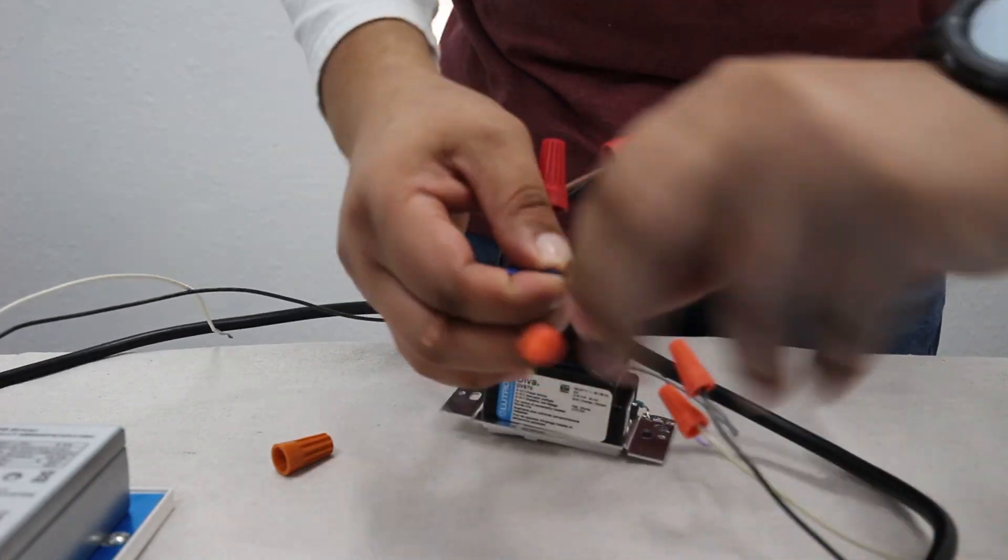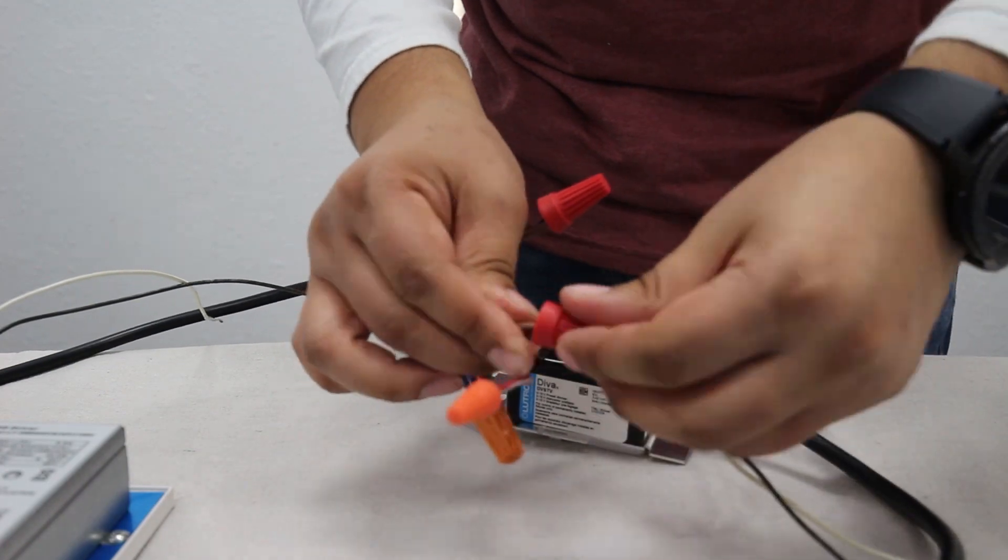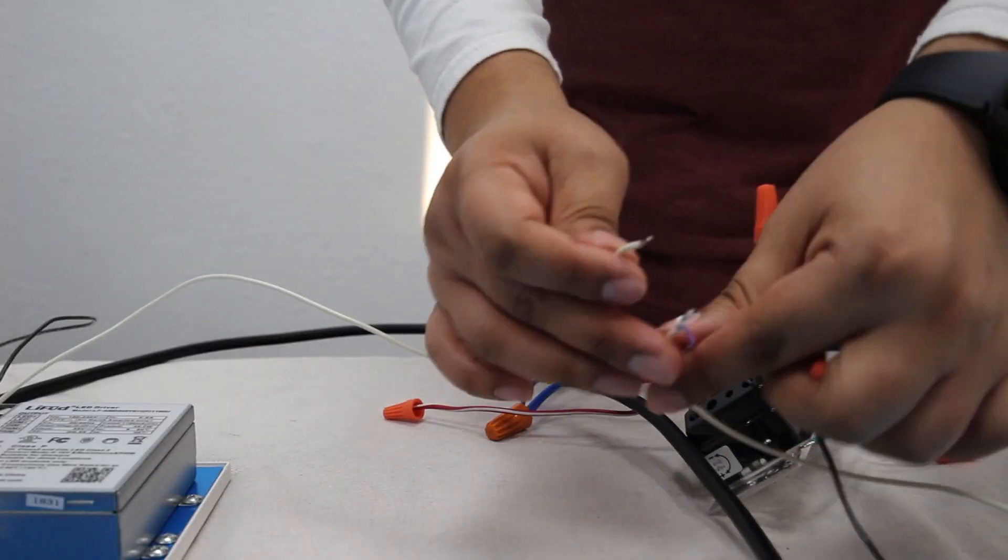If you want to wire multiple fixtures to a single dimmer, plug in extension wires the same way, remove the wire caps, and twist in the extension wires to the dimmer wires.